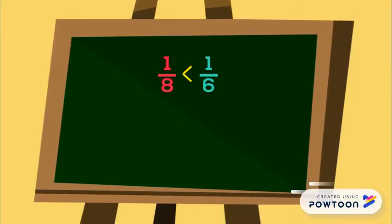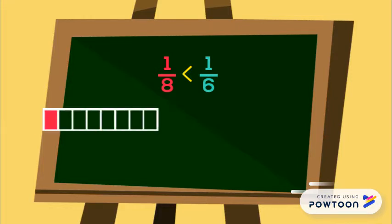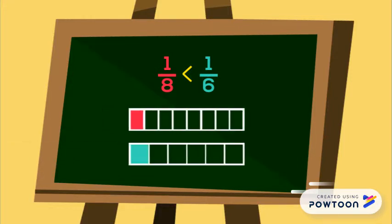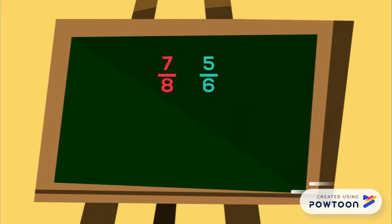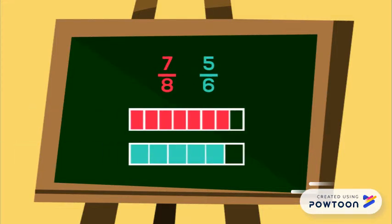1/8 is smaller than 1/6 because the equal parts in eighths are smaller than equal parts in sixths. 7/8 is closer to a whole and is therefore the larger number. 1/8 and 1/6 are the residuals that we are comparing.